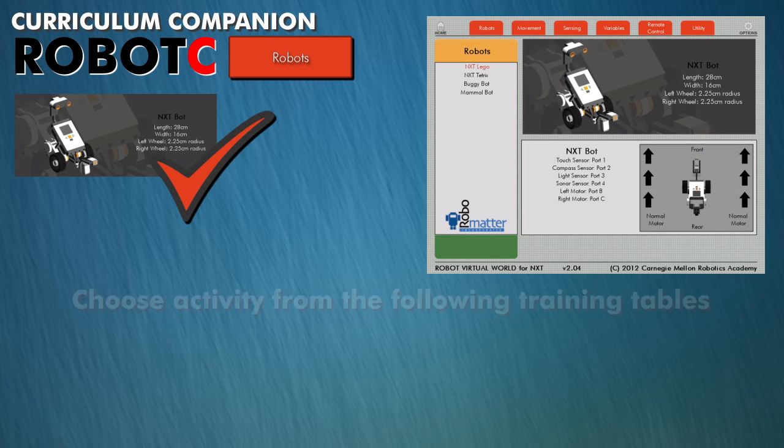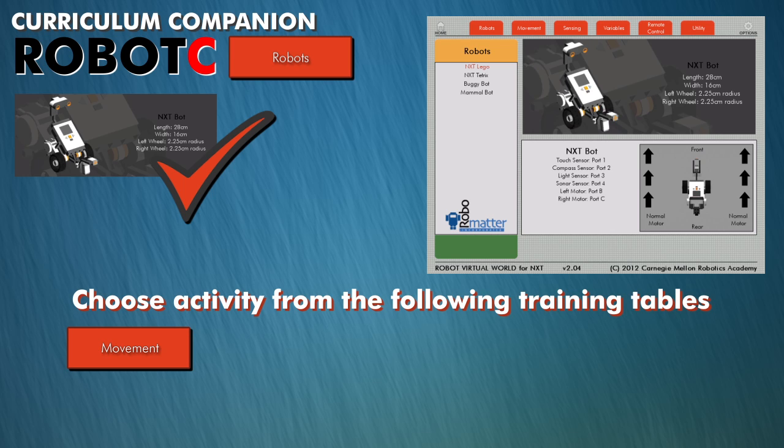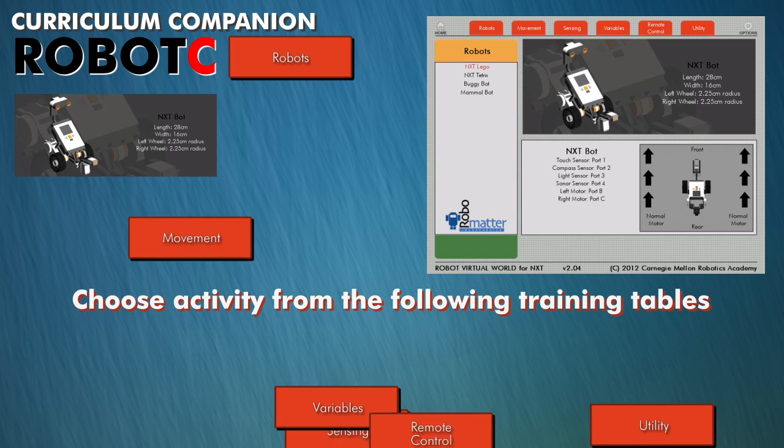Once the robot has been selected, students can choose an activity from any of the following categories: Movement, Sensing, Variables, Remote Control, and Utility Tables.